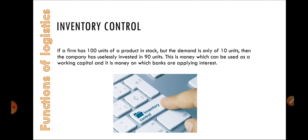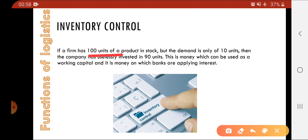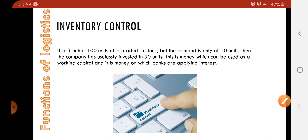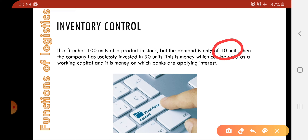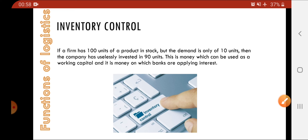Next, talking about inventory control. If a firm has 100 units of a product in a store but the demand is only for 10 units, the cost invested in the remaining 90 units is essentially wasted. If you had invested that cost elsewhere, you could have gained interest or extra money on it. So you have to keep a close check on the inventory.